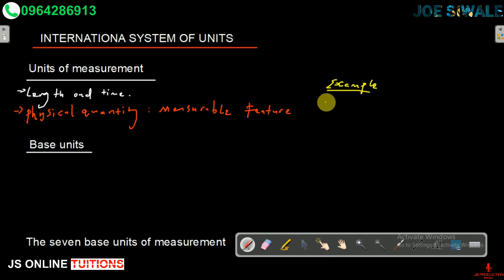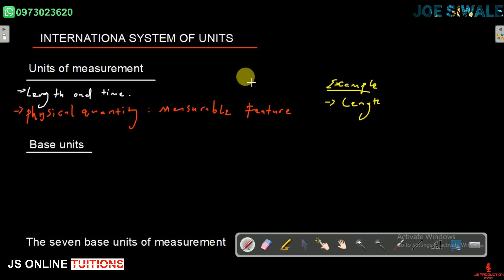An example of a physical quantity is length. In the past, a number of different units were used to measure the same quantity. To avoid confusion, scientists now use one set of units referred to as the SI units.